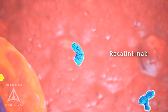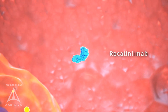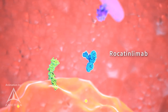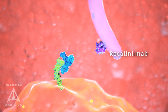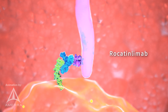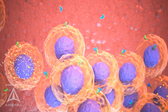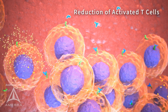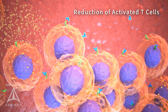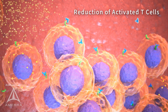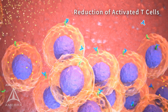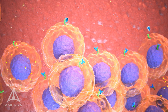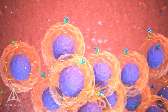Rocatinlimab is a humanized monoclonal antibody that blocks OX40. By blocking OX40, Rocatinlimab reduces the number of activated OX40-expressing T-cells and the production of pro-inflammatory cytokines, which are responsible for driving systemic and local AD inflammatory responses.